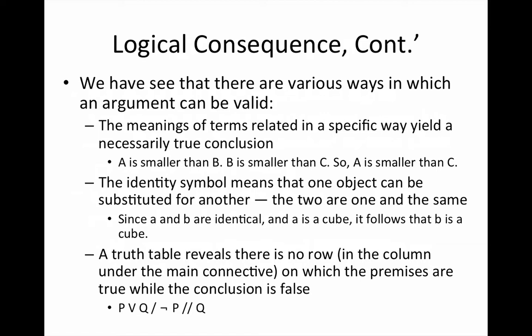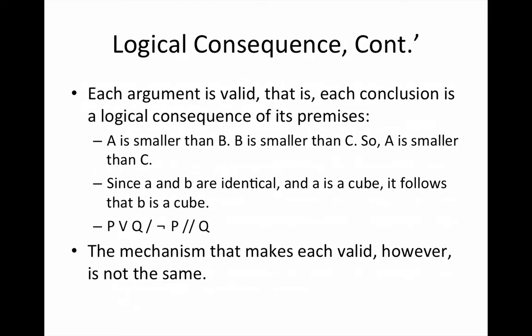For example, using the Blocks language, since A and B are identical and A is a cube, it follows that B is a cube. And more recently, we've seen consequence in terms of what a truth table reveals. A sentence is a consequence of another or others when there's no row of the truth table in the column under the main connective where the conclusion sentence is false while the premise sentences are true. So we can say each argument is valid, each conclusion is a logical consequence of its premises, but the mechanism whereby that validity is determined is different for a truth table determination versus other types of determination.